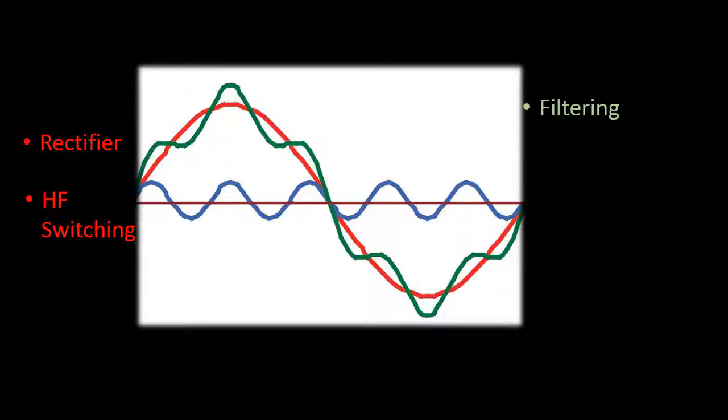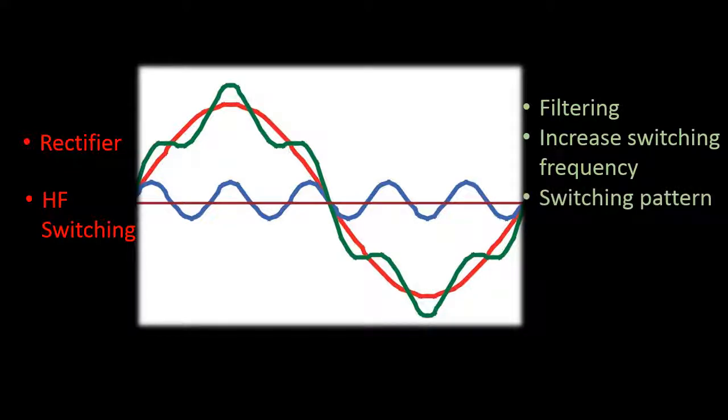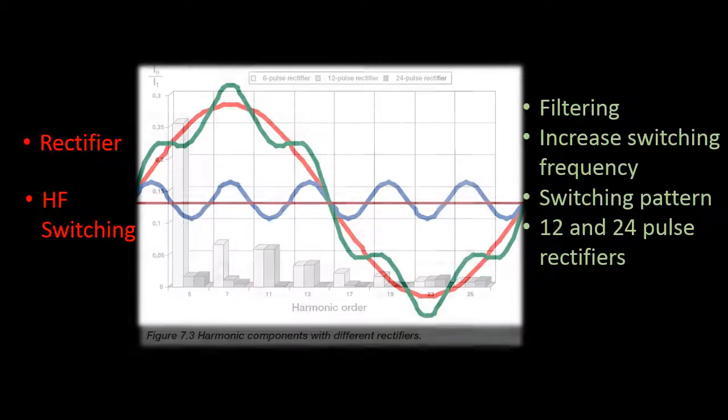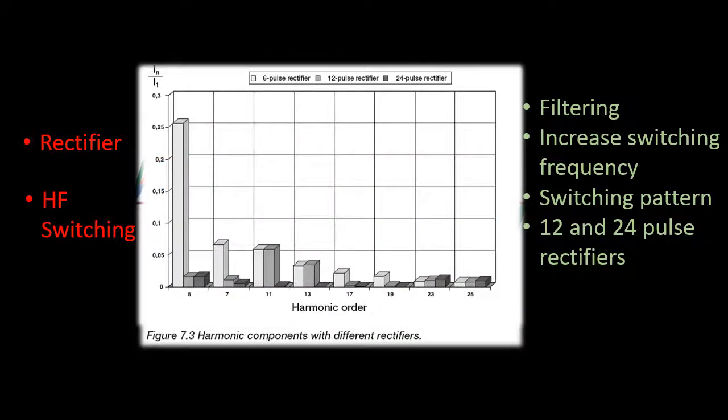Another mitigation strategy is to increase the inverter switching frequency, although the trade-off is higher switching losses. Switching patterns such as space vector modulation can also decrease switching-related harmonics. Using more sophisticated rectifier designs, such as 12 and 24 pulse rectifiers, can decrease the harmonics associated with rectification.